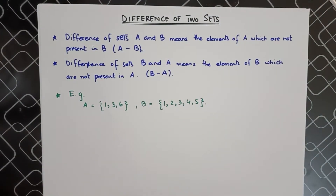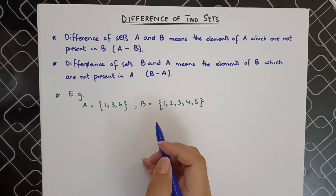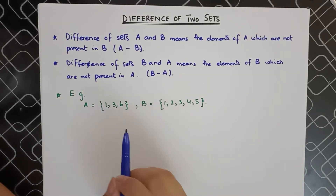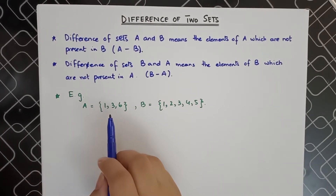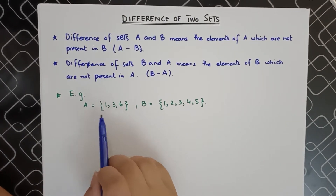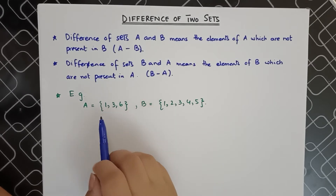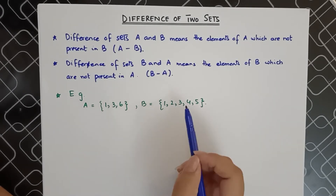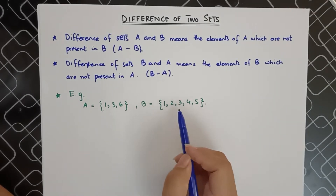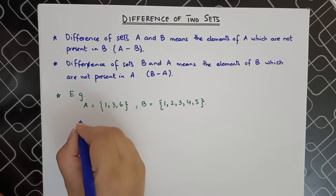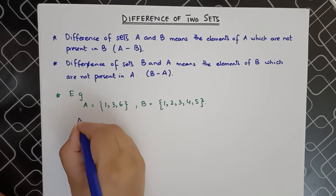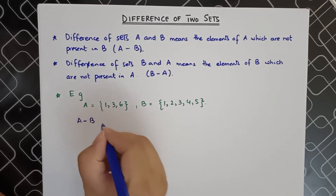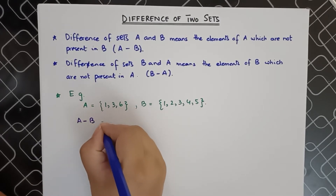Now let's look at an example which will help you understand this much better. Let's suppose we have two sets A and B, where A is {1, 3, 6} and B is {1, 2, 3, 4, 5}. First of all, we are supposed to calculate A minus B.